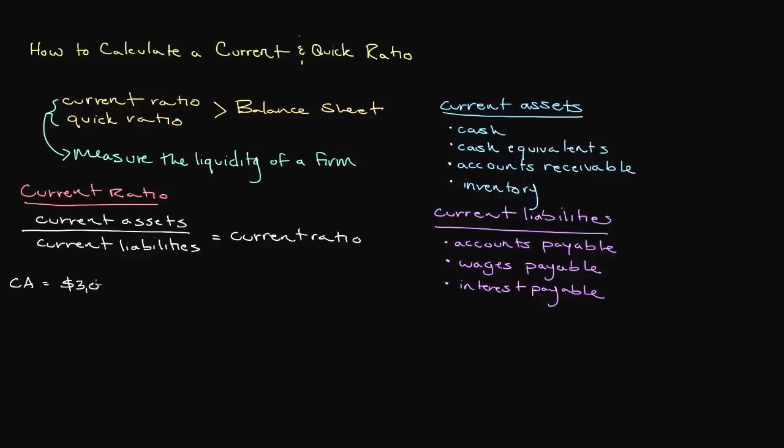As an example, let's say that we have $3,000 in current assets with $1,500 in current liabilities. After dividing our $3,000 in current assets by our $1,500 in current liabilities, we would be left with a current ratio of 2. This means that we have twice as many current assets as current liabilities.